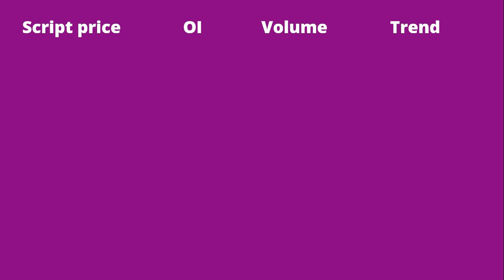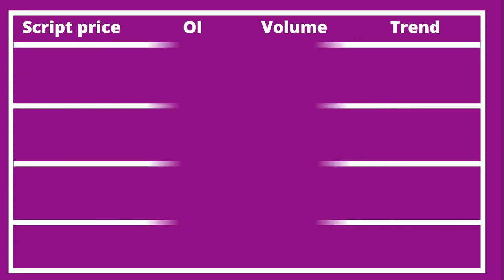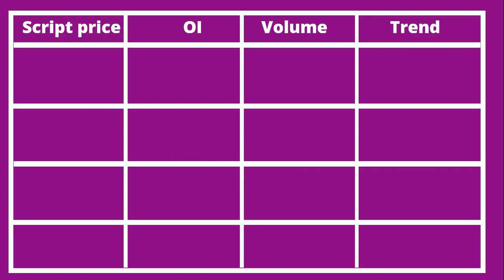Let me explain with a table. We have script price, open interest, and volume — and we gauge in which direction the market is going. Consider four cases. First: if the script is going up and open interest is also going up, naturally volume will also go up. It indicates a lot of people are buying, new positions are opening, and script is going up — that means the trend is strongly bullish. Second: if the script is going up but OI is going down and volume is also going down, that means a lot of people are closing their positions — unwinding — which is a potential trend reversal, so we say the market is weakly bearish.